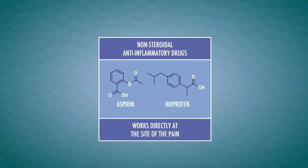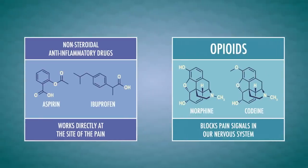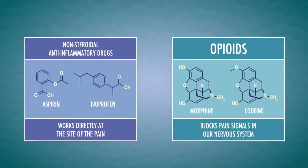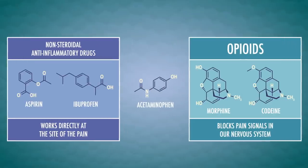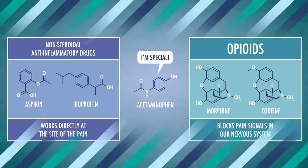Painkillers usually come in several varieties. Non-steroidal anti-inflammatory drugs, such as aspirin and ibuprofen, work directly at the site of the pain to stop the formation of compounds that play a big part in pain and inflammation. On the other hand, opioids, such as morphine and codeine, stop us from sensing pain by blocking pain signals in our nervous system. Acetaminophen doesn't sit in either of these categories. In fact, even though we know that it does work, and we have some solid theories about how it might work, the exact details are still a bit of a collective medical shrug.